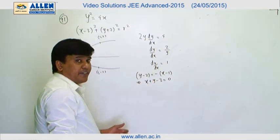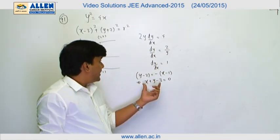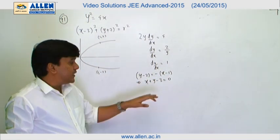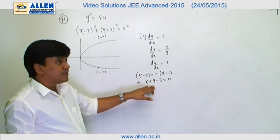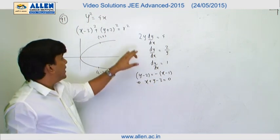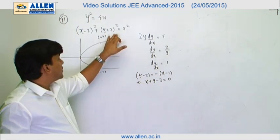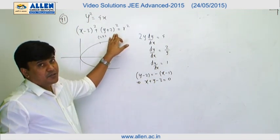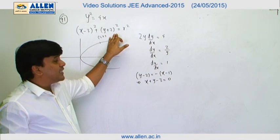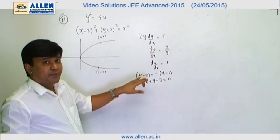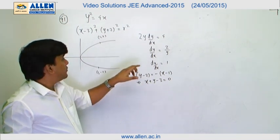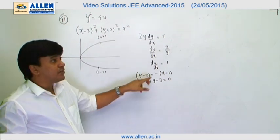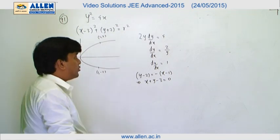So the equation of the normal at the latus rectum is x + y − 3 = 0, and since this touches the circle (x − 3)² + (y + 2)² = r², we can say the perpendicular distance from the center to this line equals the radius of the circle.